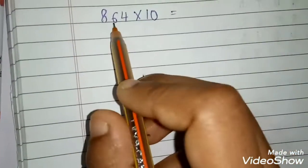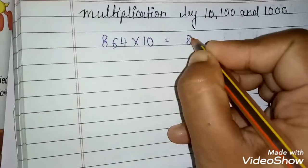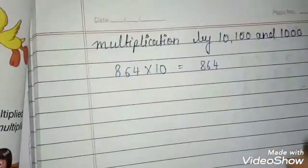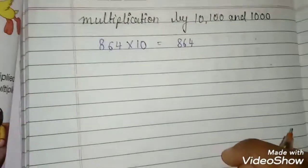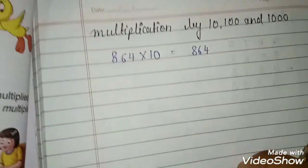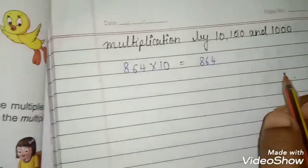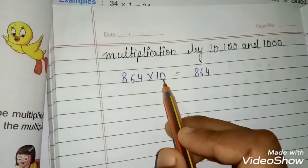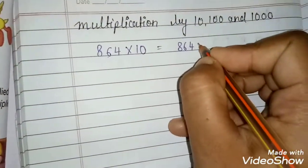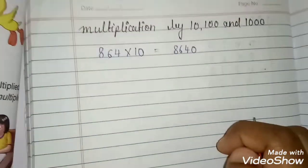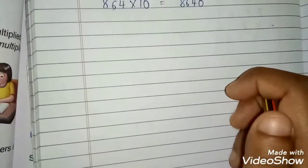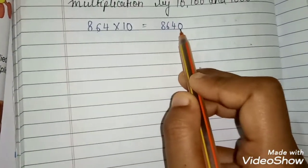Write the number first as it is. Then what do you have to do? You have to put the zero at the right. How many zeros we have here? 1. So one zero you will put here. Your answer will be 8640.